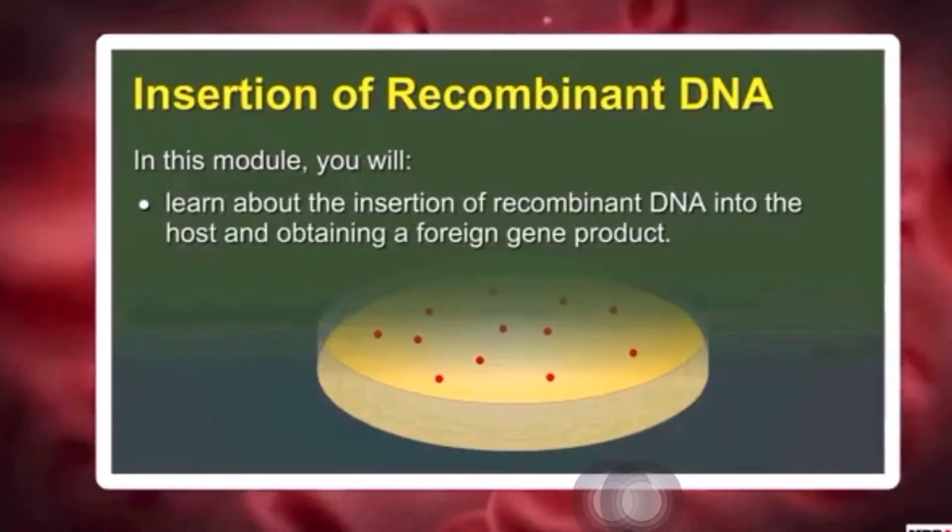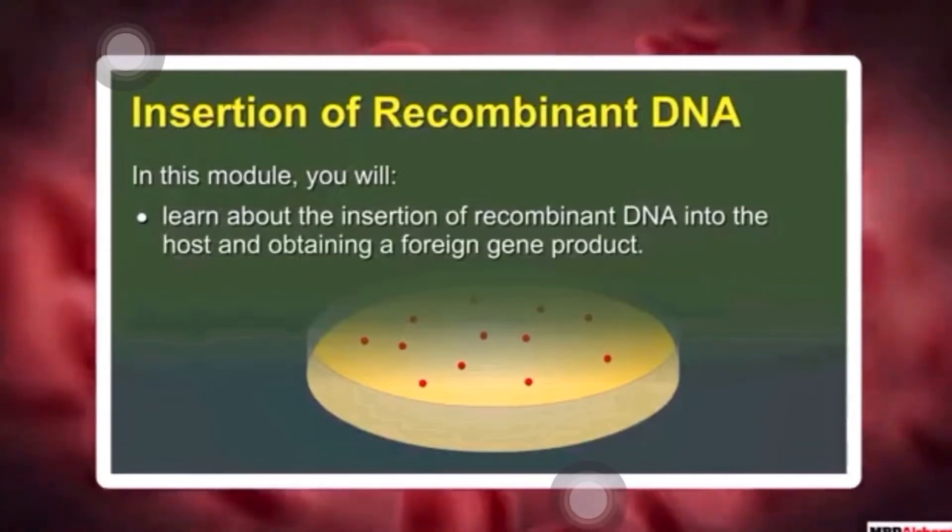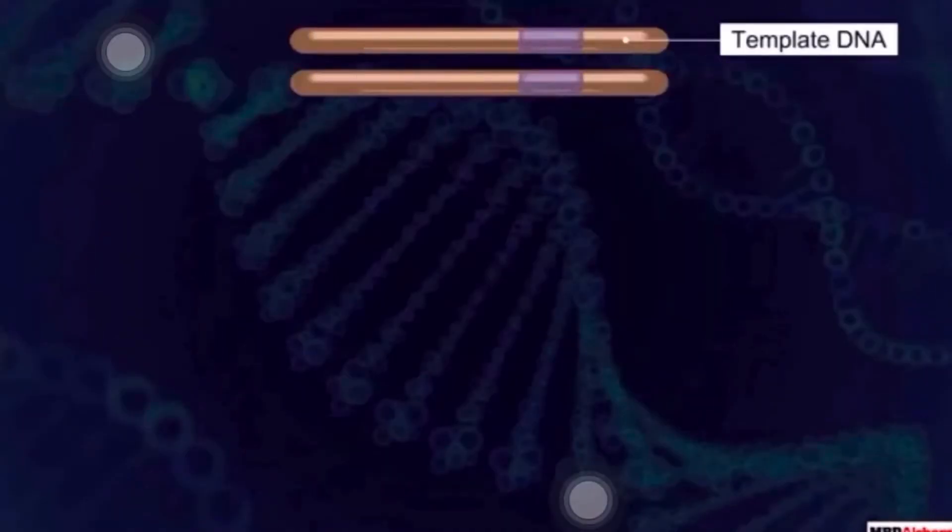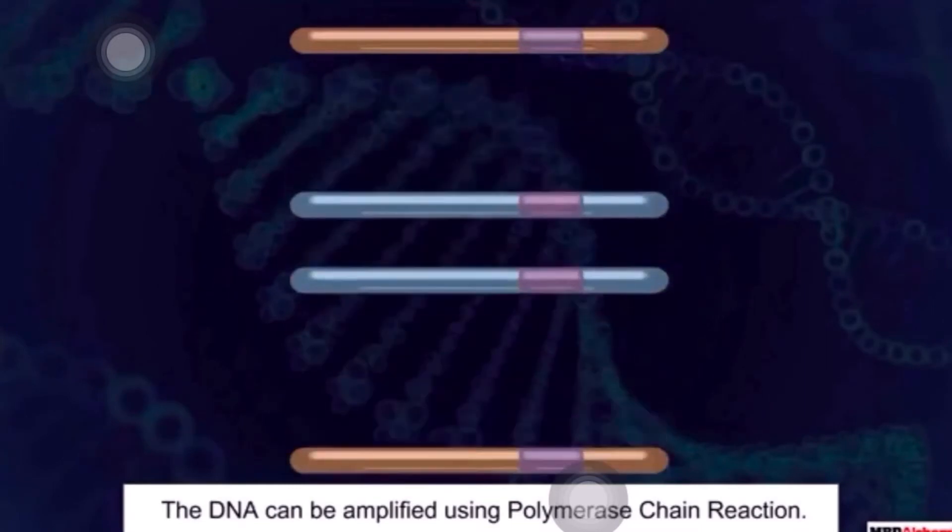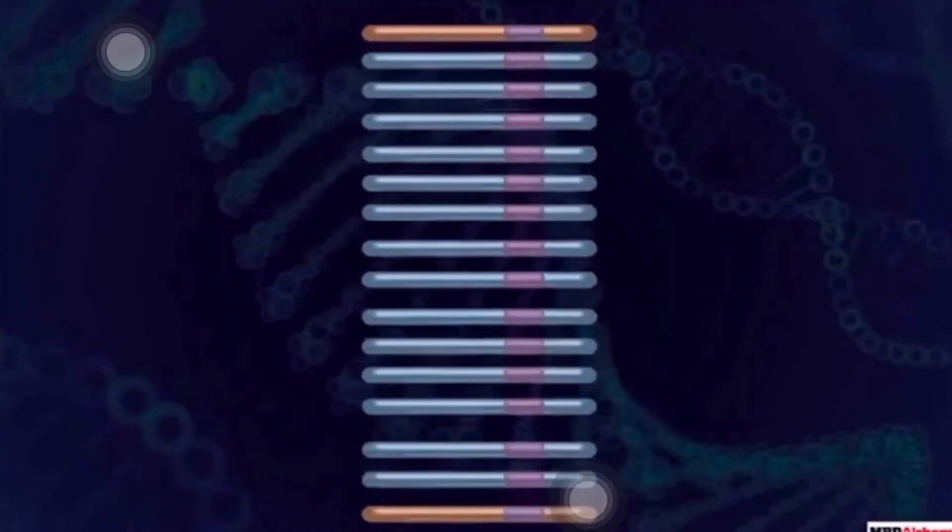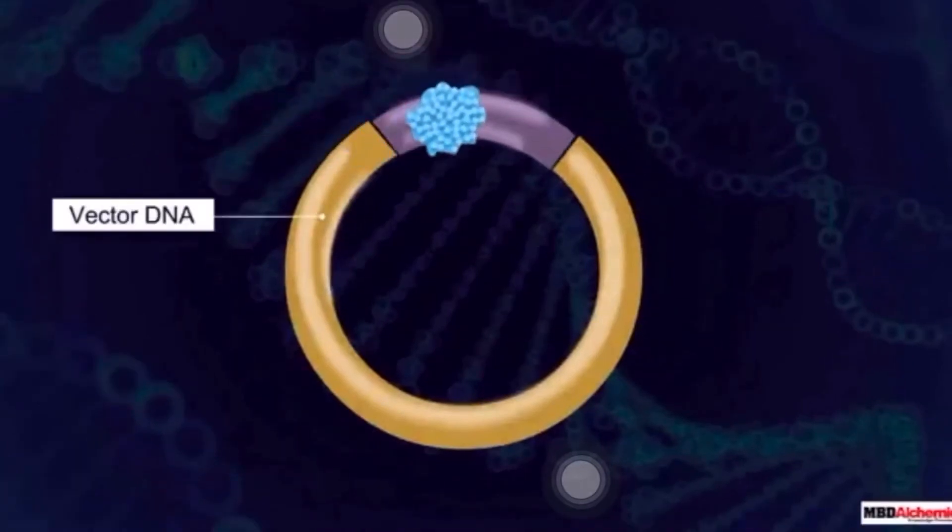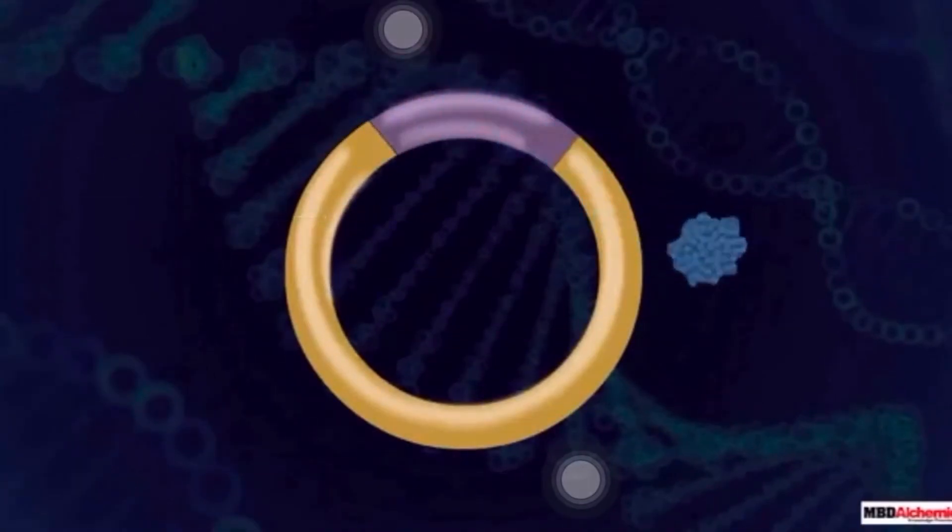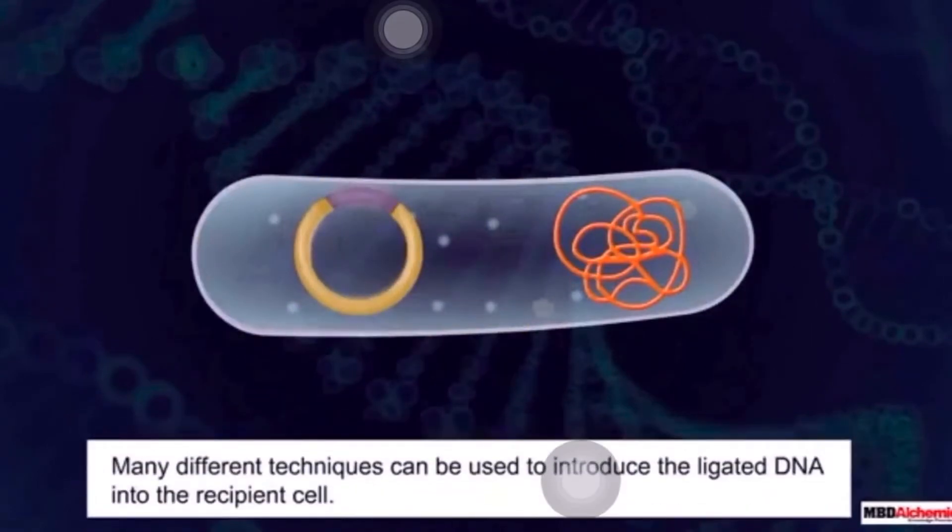Here, we have already learned how gene of interest is amplified or produced in many copies by using PCR technique. You can see here how gene of interest is produced in N numbers by using PCR. Once the gene of interest is amplified, it is ligated with the vector, you can see here. And this in turn is inserted into the host for further cloning through various techniques.